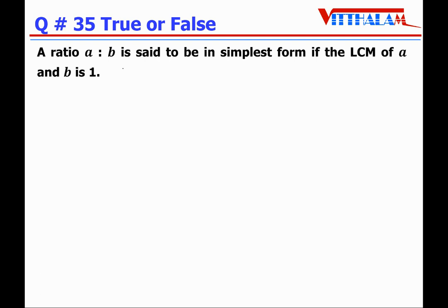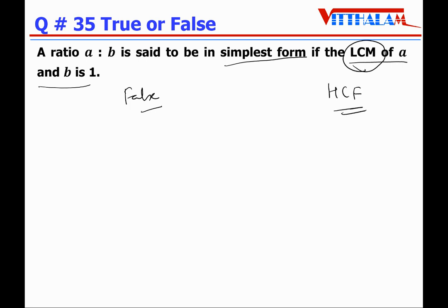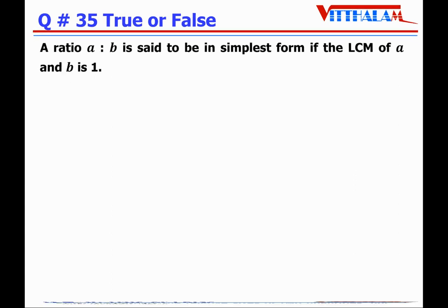Question 35: If a is to b is in the simplest form if the LCM of a and b is one — it is False. It is not LCM, it is HCF. If the HCF is supposed to be one, then it's in simplest form.